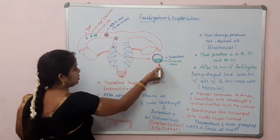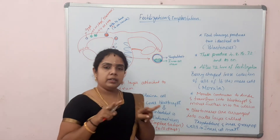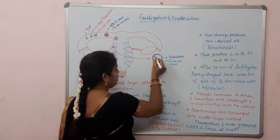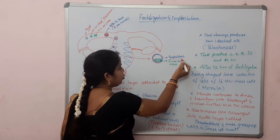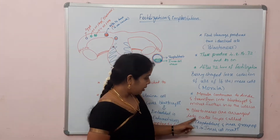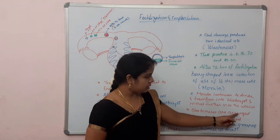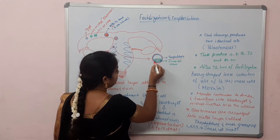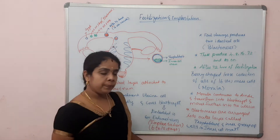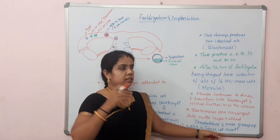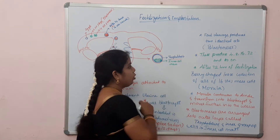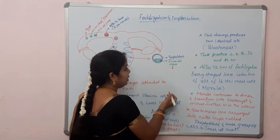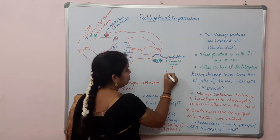The cells present in this blastocyst are differentiated into two kinds of cells. The first kind are flattened cells which form the outer layer, called the trophoblast. The blastomeres are arranged into this outer trophoblast layer, shown here in blue. The inner cells, shown in green, are called the inner cell mass, and this inner cell mass is going to develop and differentiate into the embryo.